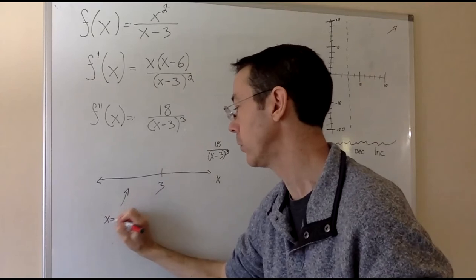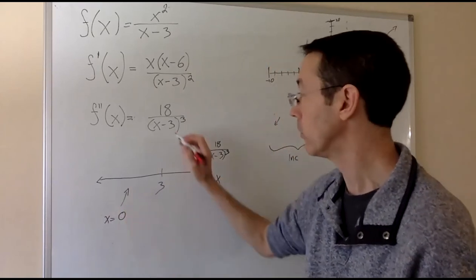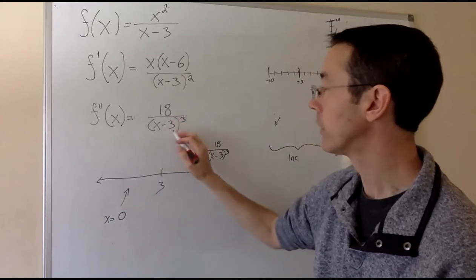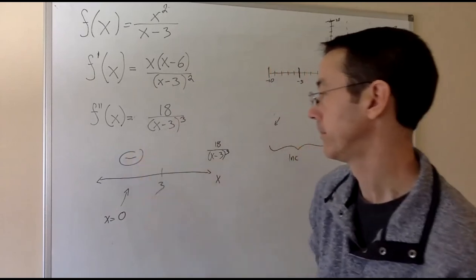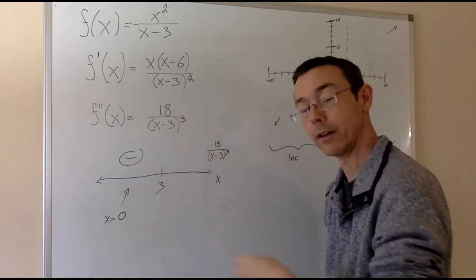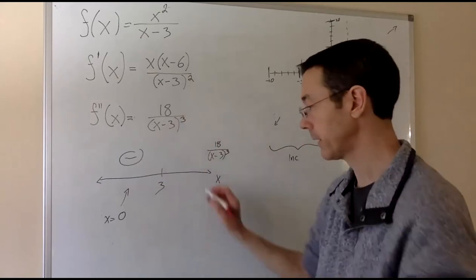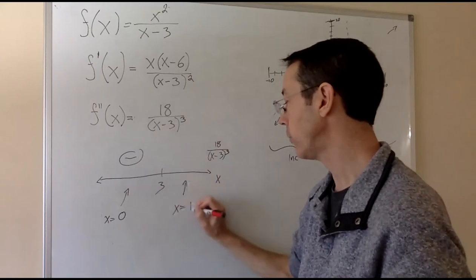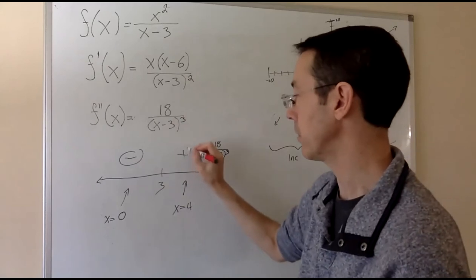Let's label that and check one value in each of these two intervals. Let's check x equals 0. That's a simple one to plug in. When we do that, we get 18 over negative 3 cubed. That's going to be a negative. Positive over negative 3 cubed. Negative 3, positive 9, negative 27. And when we plug in x equals 4, now we have 18 over 1 cubed. So that's definitely going to be positive.